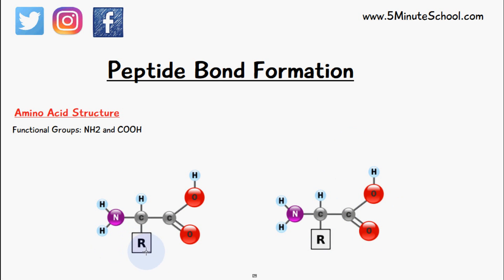This R which you can see here stands for a residual group, which basically means there's a certain combination of elements which are attached here, and this gives the amino acid different properties. But we're going to be discussing this in a different video because it's not involved in the peptide bond formation.